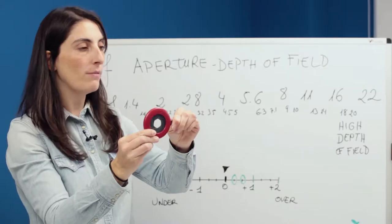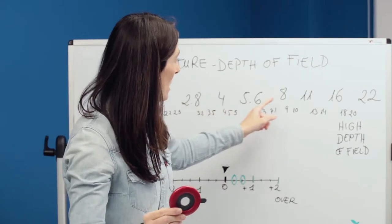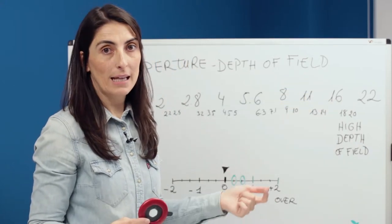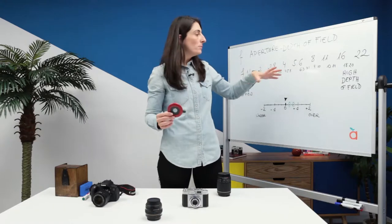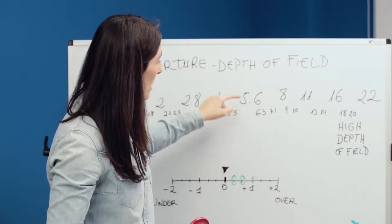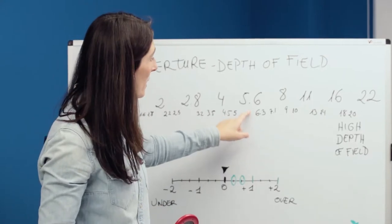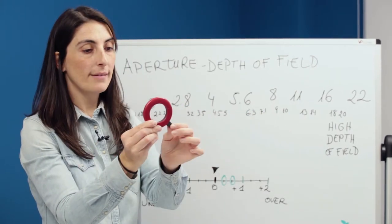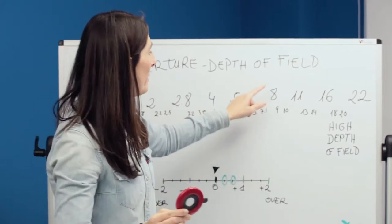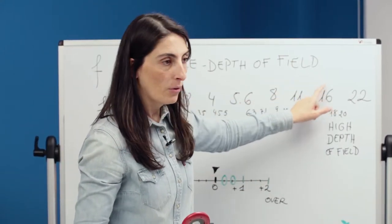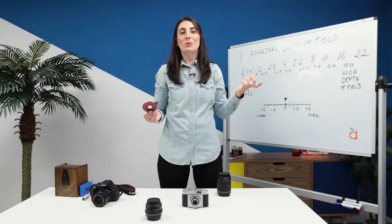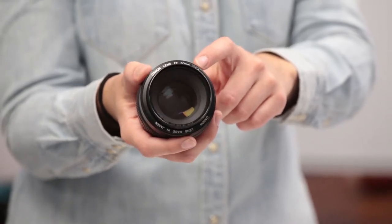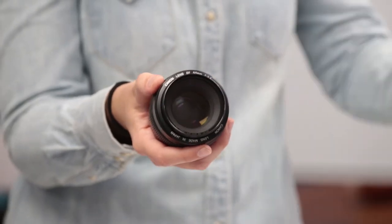Closing the aperture means closing the hole as well. In this case, we get less light inside while we get a clearer scene. Pay attention: with depth of field, it works the other way around. Bigger numbers refer to reduced incoming light, while smaller numbers let more light come through the camera.